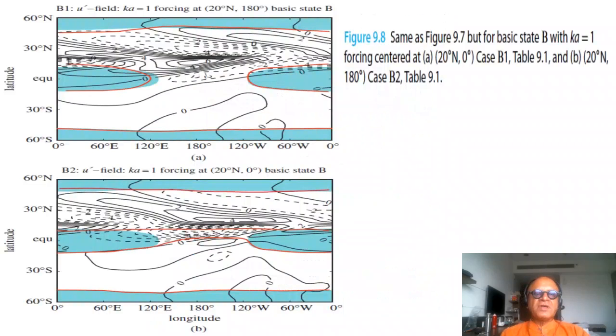If you take state B where we have a weak westerly duct, then we have same forcing at two locations, 20 north at the dateline and 20 north at the Greenwich meridian. In one case you have the forcing pretty close to the westerly duct, so you can see that now much more of a signal in the u-prime has come down clearly into the tropics in the westerly duct region, with the easterlies still blocking the southward penetration of the extratropical forcing. Whereas if you put the forcing where there is no westerly duct, you get a different kind of energy propagation.